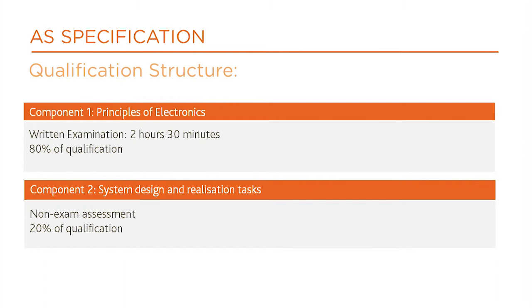The AS specification is made up of two components. Component 1, Principles of Electronics, which is examined. Component 2 is a set of system design and realisation tasks and is a non-examined assessment.